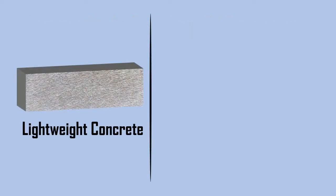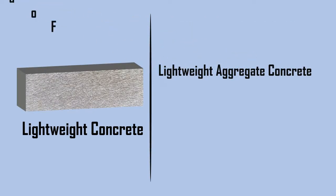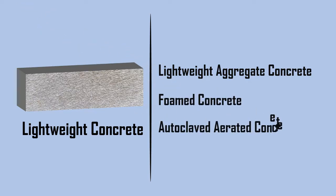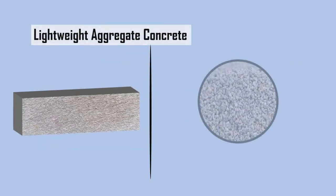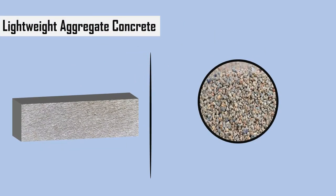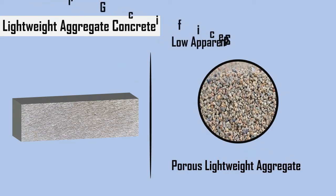Lightweight concretes can either be lightweight aggregate concrete, foamed concrete, or autoclaved aerated concrete. Lightweight aggregate concrete is produced by using a porous lightweight aggregate of low apparent specific gravity.